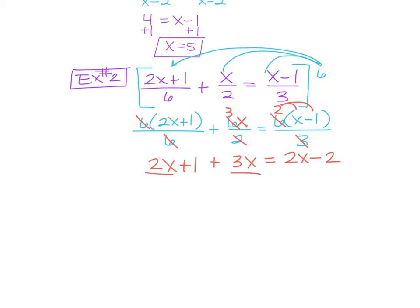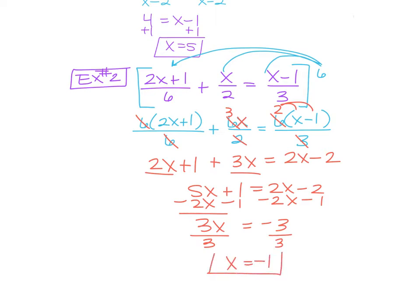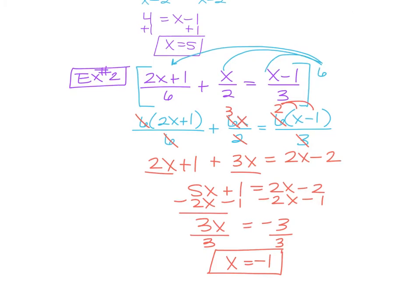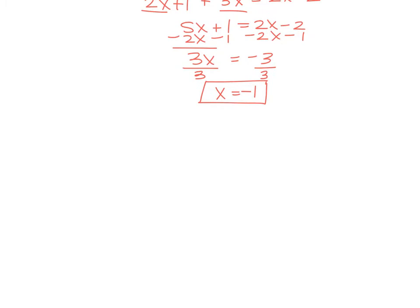And now it's just a matter of solve for x. So 2x plus 3x is 5x plus 1 equals 2x minus 2. So take away the 2x's. You get 3x. Take away the 1. You get negative 3, and then divide. So x should be negative 1. Questions? Good there?